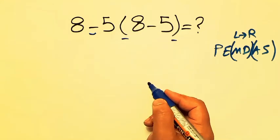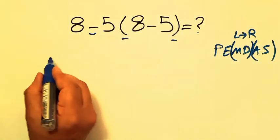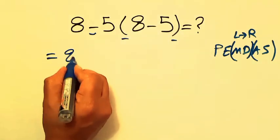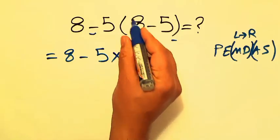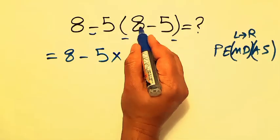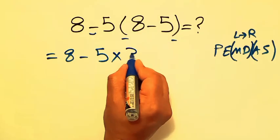According to PEMDAS, first we have to handle these parentheses. So, 8 minus 5, then times these parentheses. Inside these parentheses, we have 8 minus 5, which equals just 3.